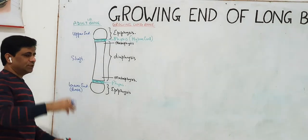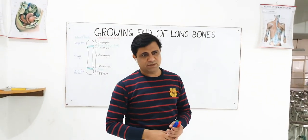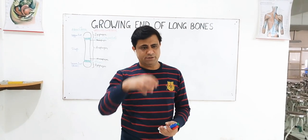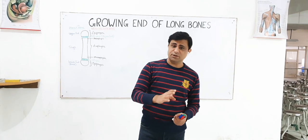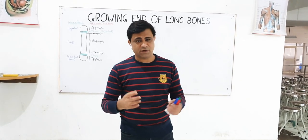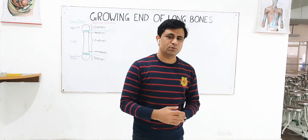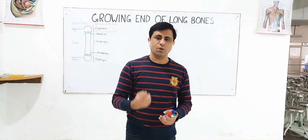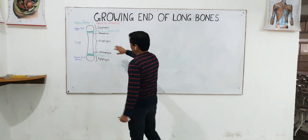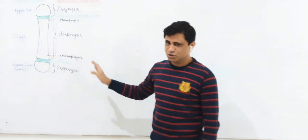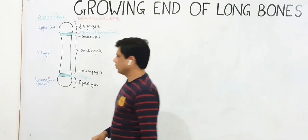This terminology — upper end, lower end, and shaft — applies to any long bone: humerus, radius, ulna all have an upper end, lower end, and shaft. Even miniature long bones like metacarpals, metatarsals, and phalanges are also considered miniature long bones with these same three parts. But in a growing bone up to skeletal maturity, the terminology includes the diaphysis, metaphysis, epiphysis, and physis.